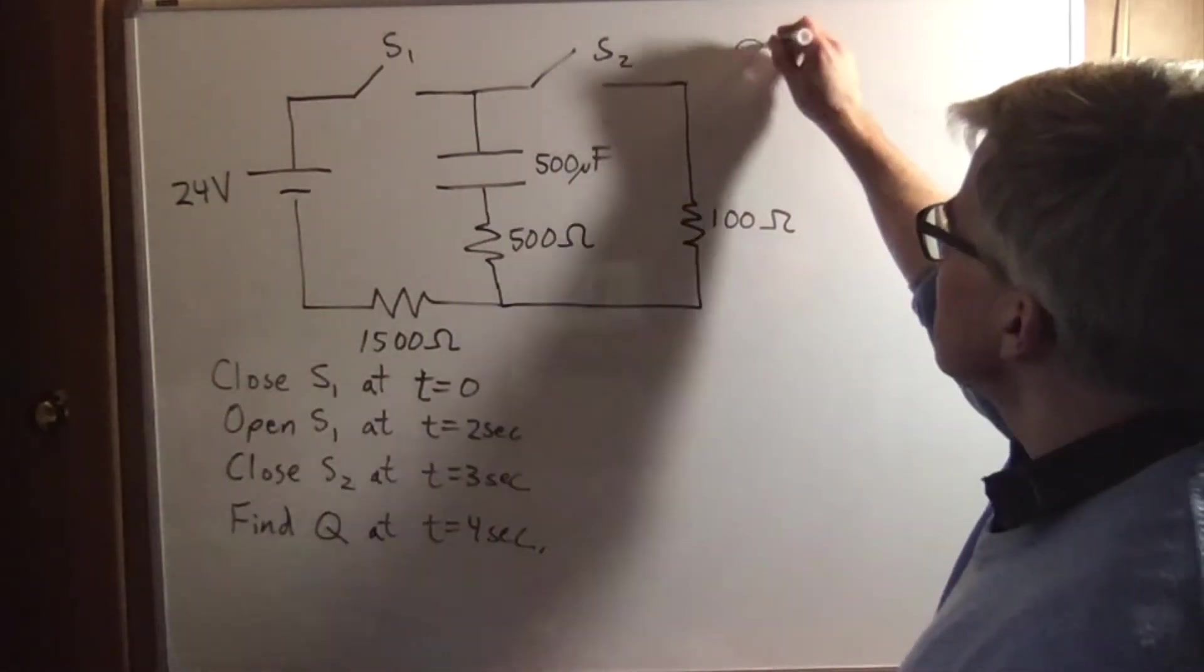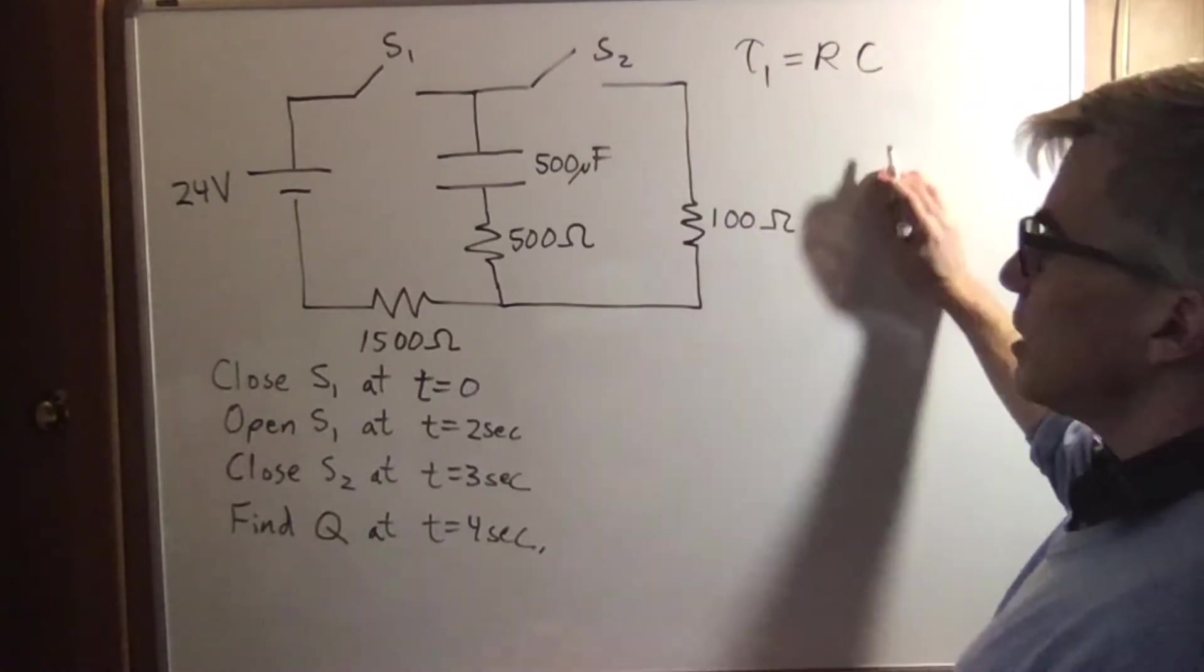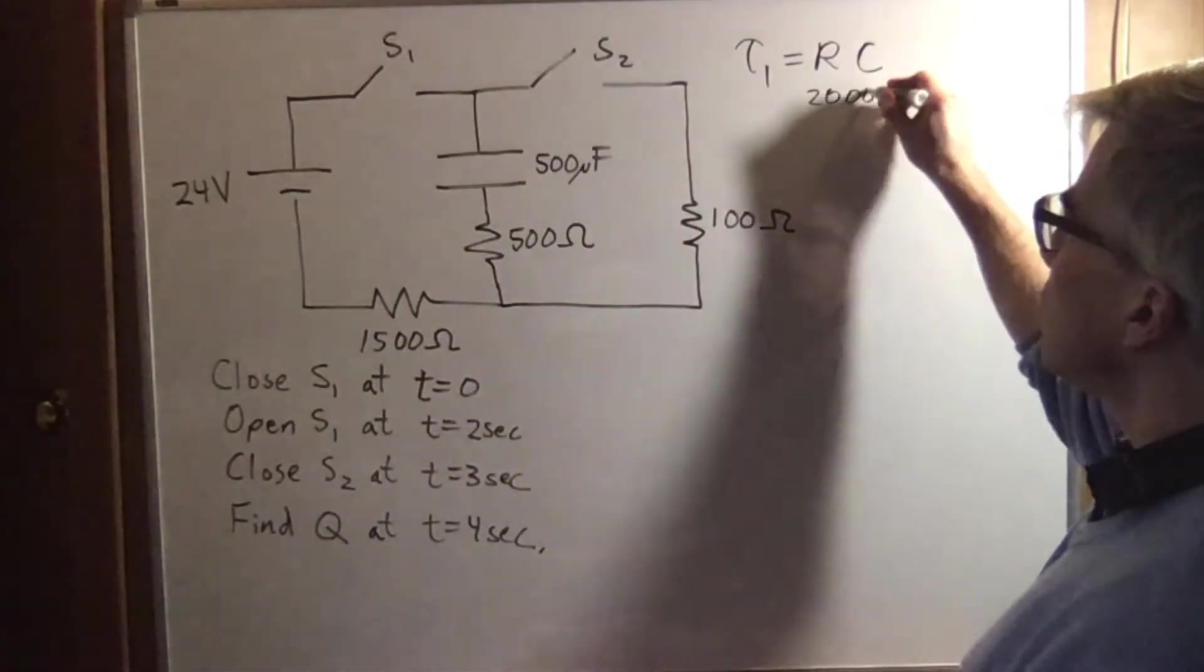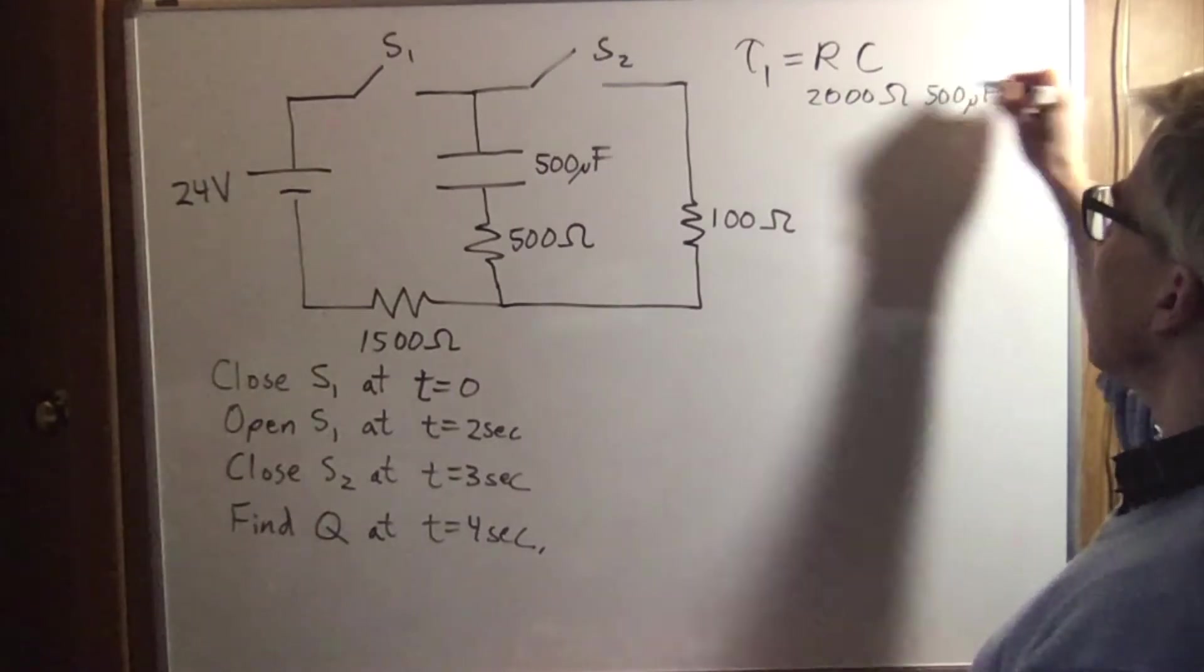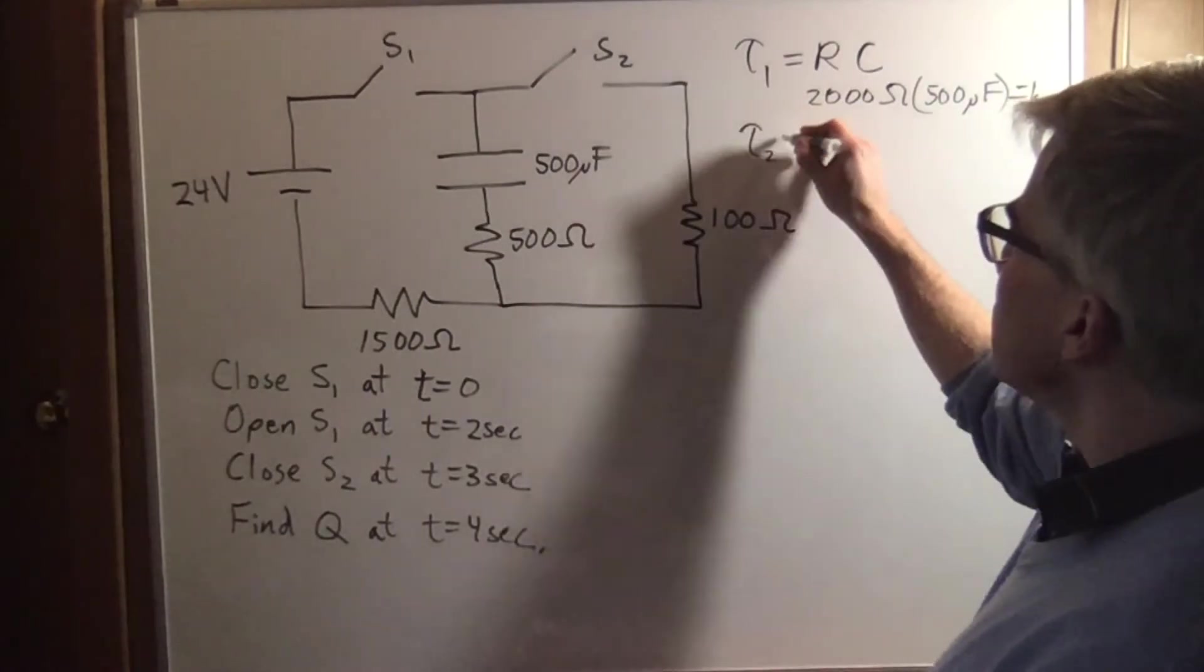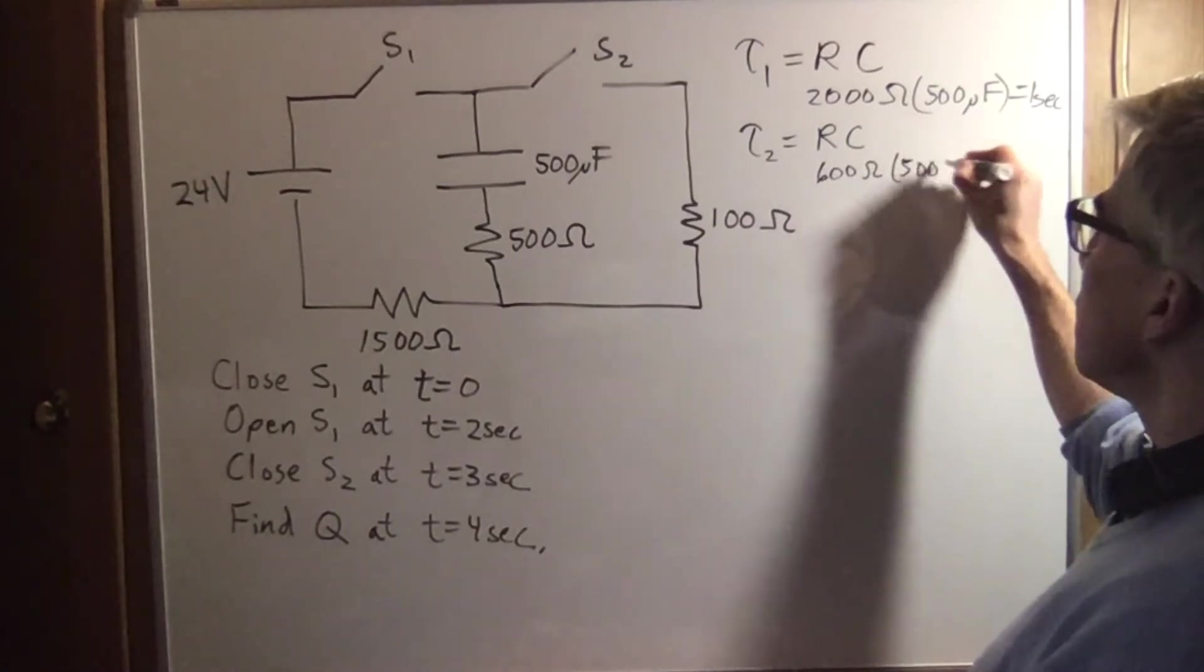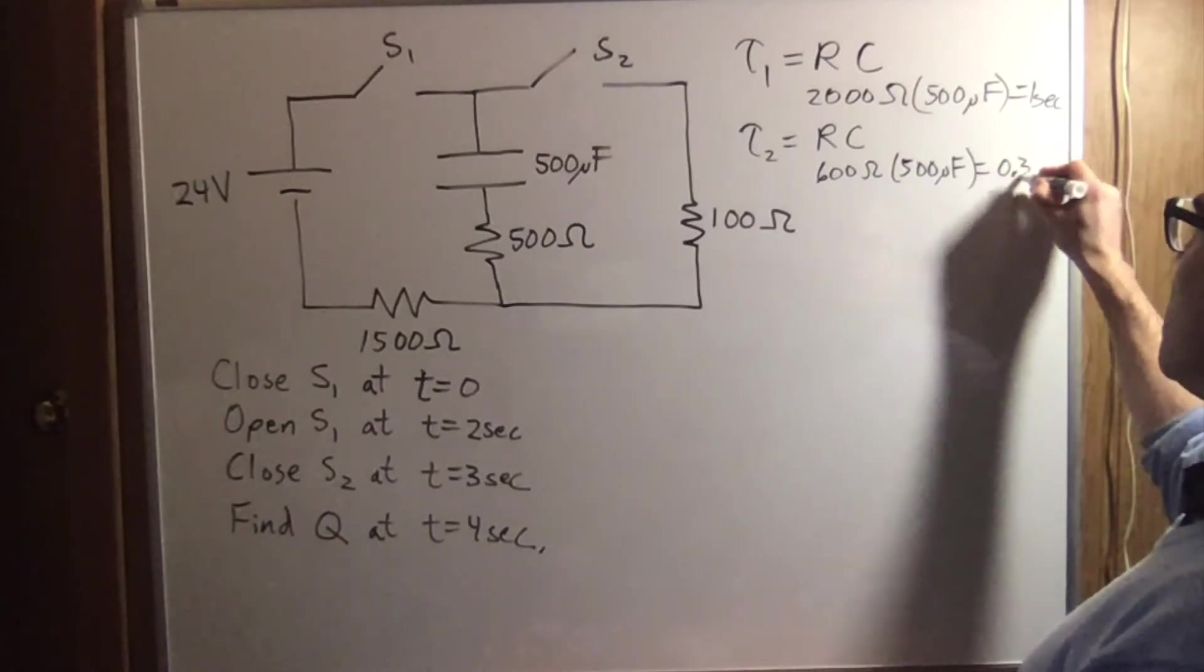First of all, tau number one for charging is going to be R times C. When it's charging, we've got 1500 ohms and 500 ohms. We've got 2000 ohms and 500 microfarad. That works out to be one second. For the discharging, we're going to have 600 ohms and 500 microfarads. So that's going to be 0.3 seconds.